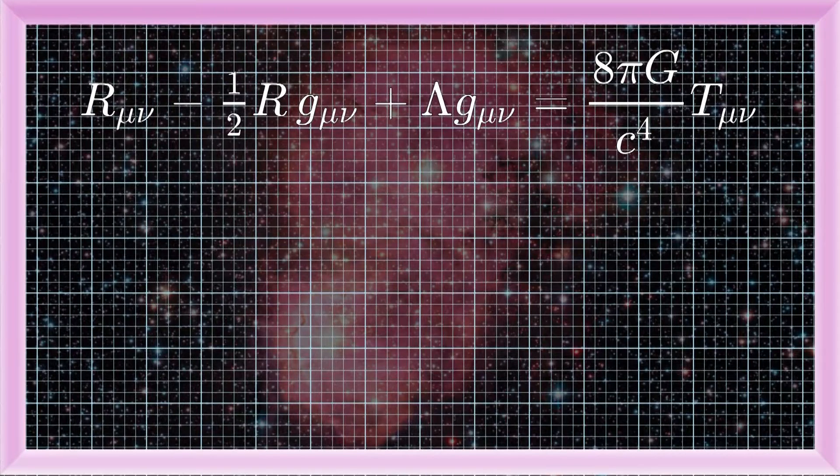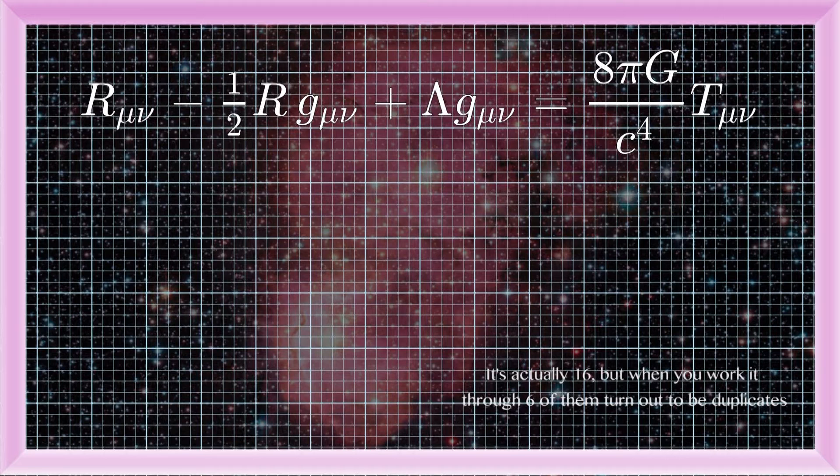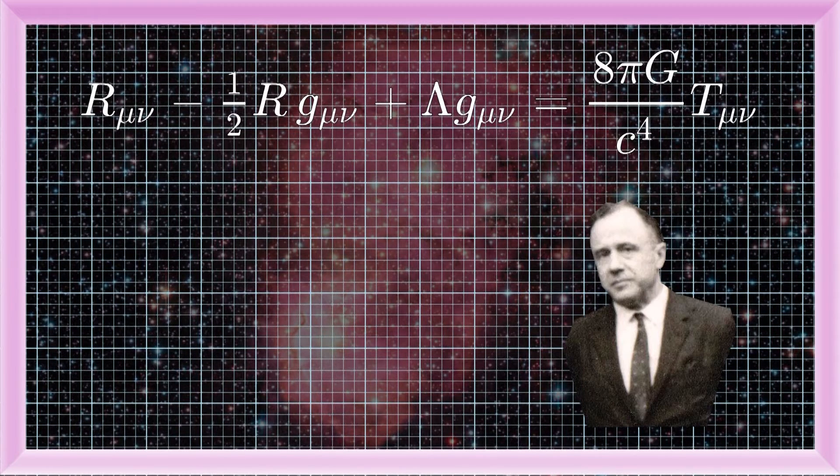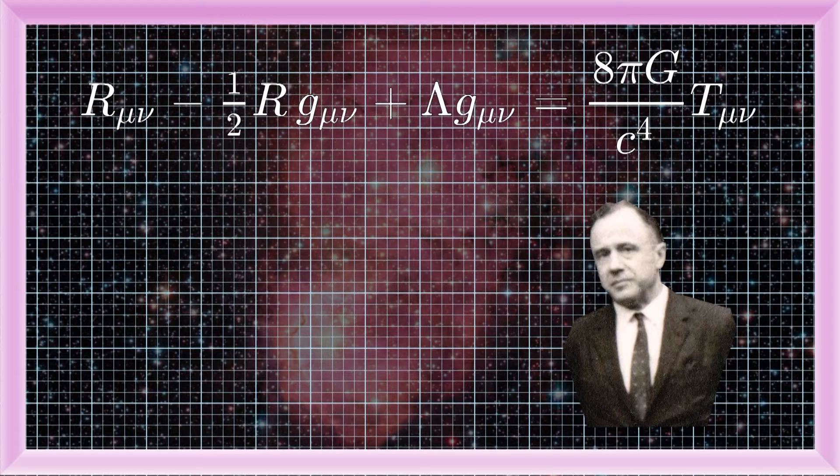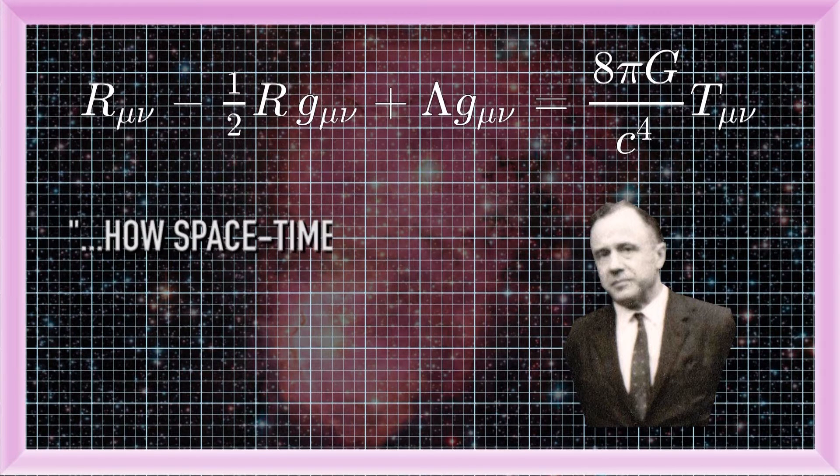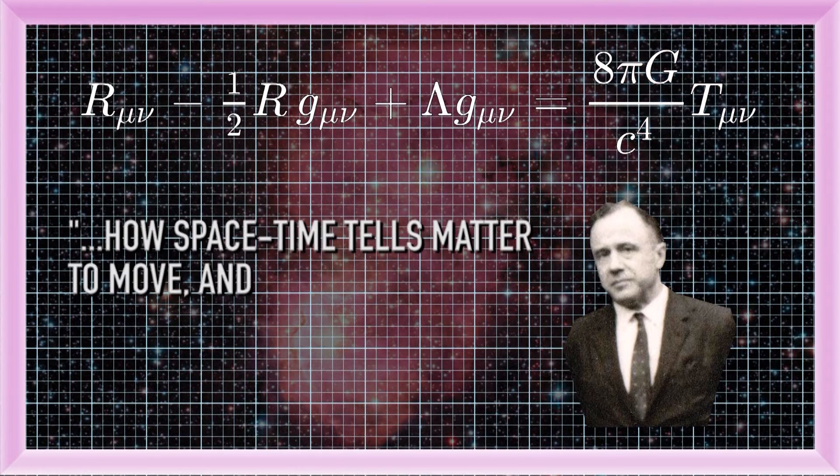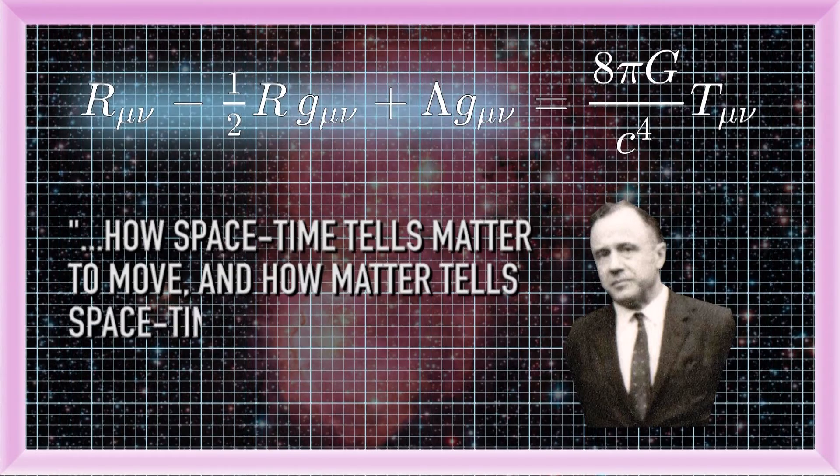This is a collection of Einstein's equations of general relativity that he spent eight years developing. There was a lot of maths involved. And you can tell, because although this looks like one equation, it's actually ten. It sounds confusing, but basically, as theoretical physicist John Wheeler said, this equation shows how space-time tells matter to move, and how matter tells space-time to curve.